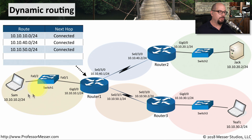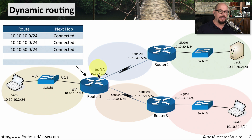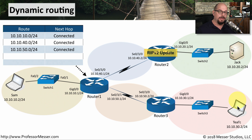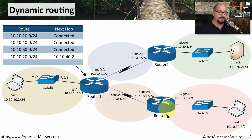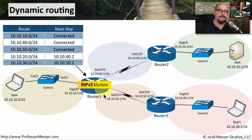Here's the exact same network — we still have Sam, Jack, and Tilk, and we're still looking at the routes from the perspective of router 1. We have all of the connected routes that are automatically added to every routing table. But we also need routes to communicate to the 10.10.20 and 10.10.30 networks. With a dynamic routing protocol, the remote routers send routing updates to all of the other routers on the network. When those routing updates are received, the information is automatically added to the routing table. Router 1 will automatically update its routing table using this dynamic routing protocol.